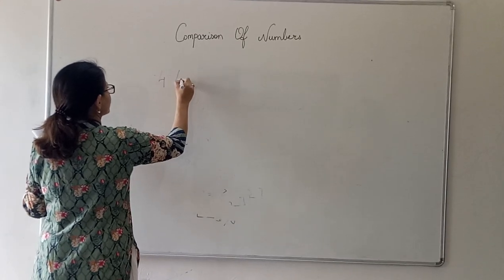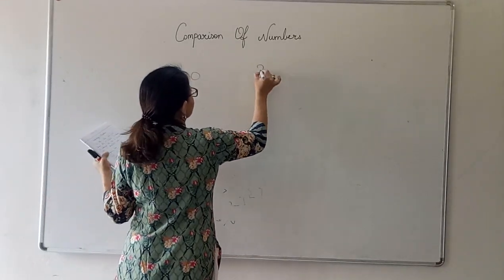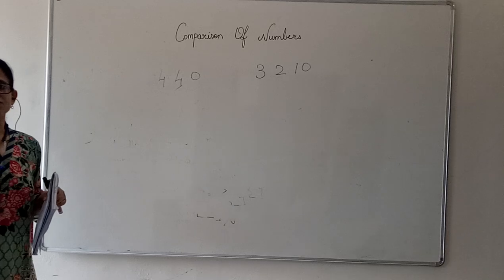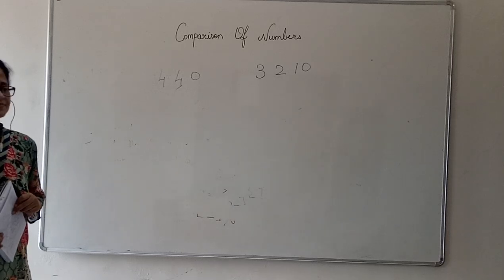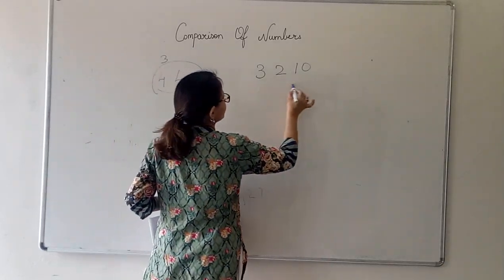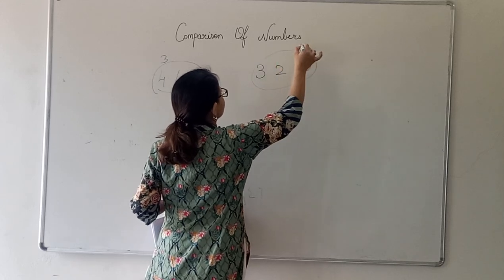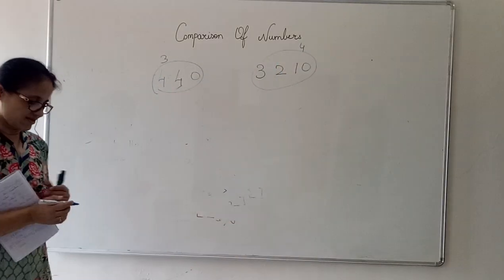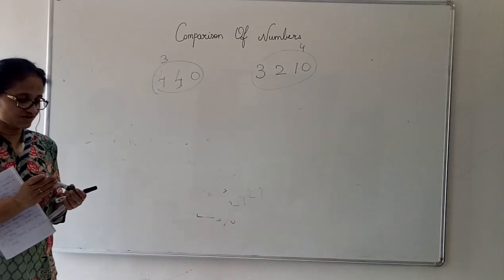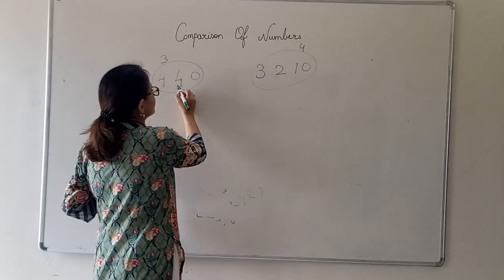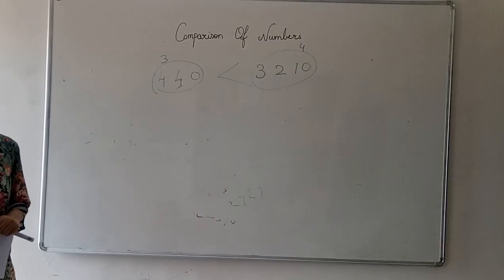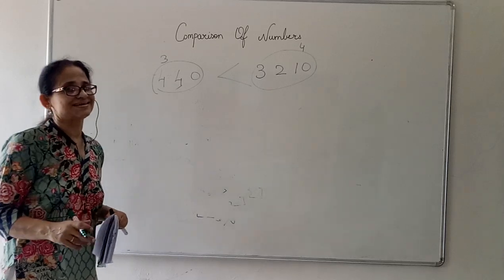Now we will do some examples. First example: 440 and 3,210. We first check rule 1: the first number 440 has 3 digits, and the second number 3,210 has 4 digits. Rule number 1 says the number with more digits is bigger, so 3,210 is greater.